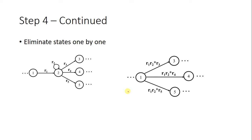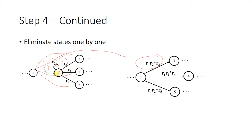Here are some more examples of Step 4. If we want to remove state 2, we figure out all possible paths. One path goes through this state, and for the path from 1 to 3 we get R1 followed by R2 Kleene star. For the path 1 to 4 and the path 1 to 5, we derive the corresponding expressions similarly.